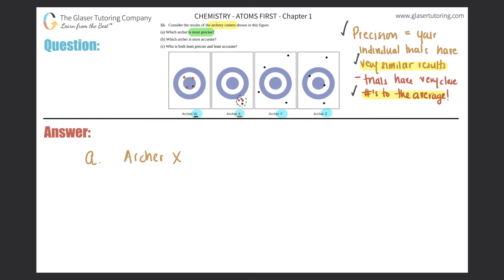Precision has nothing to do with an archer hitting the intended target, which is the bullseye — that has everything to do with accuracy. That leads us to the next question: which archer is most accurate? So if an archer is accurate, or if experimental results are accurate, that means the individual trials are very close to the intended results.